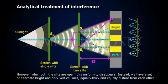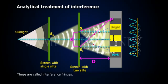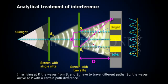Instead, we have a set of alternate bright and dark vertical lines, equally thick and equally distant from each other. These are called interference fringes. In arriving at P,